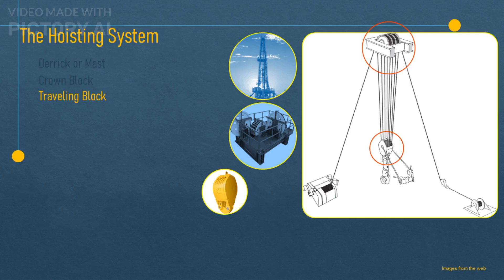The hook. This is a device that hangs from the traveling block and allows for rotation of the swivel and the drill string. The hook can also latch onto different tools and equipment that are used in drilling operations.